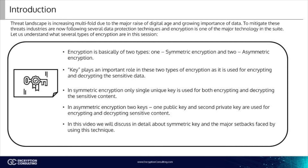There are basically two types of encryption: symmetric encryption and asymmetric encryption. Keys play an important role in both types, as they are used for encrypting and decrypting sensitive data. In symmetric encryption, only a single unique key is used for both encrypting and decrypting. In asymmetric encryption, two keys — one public key and one private key — are used.